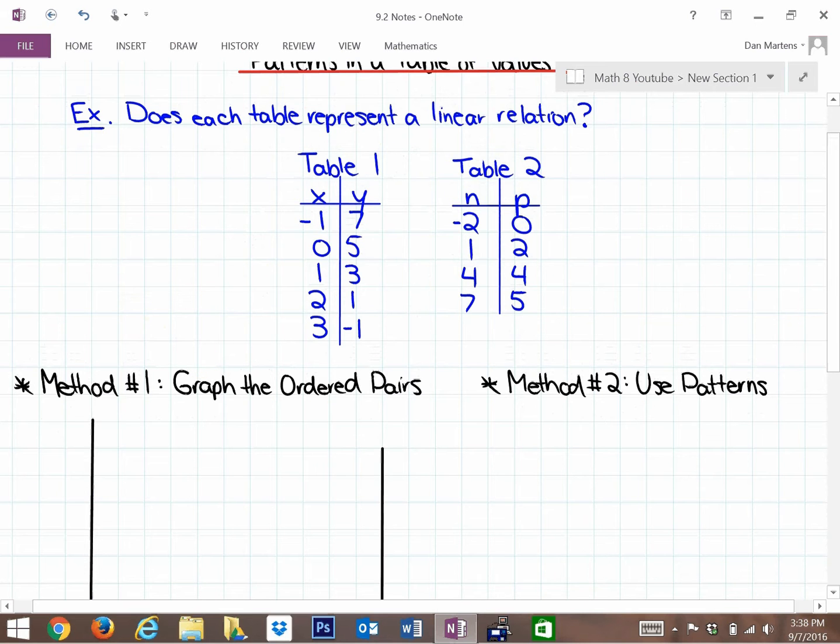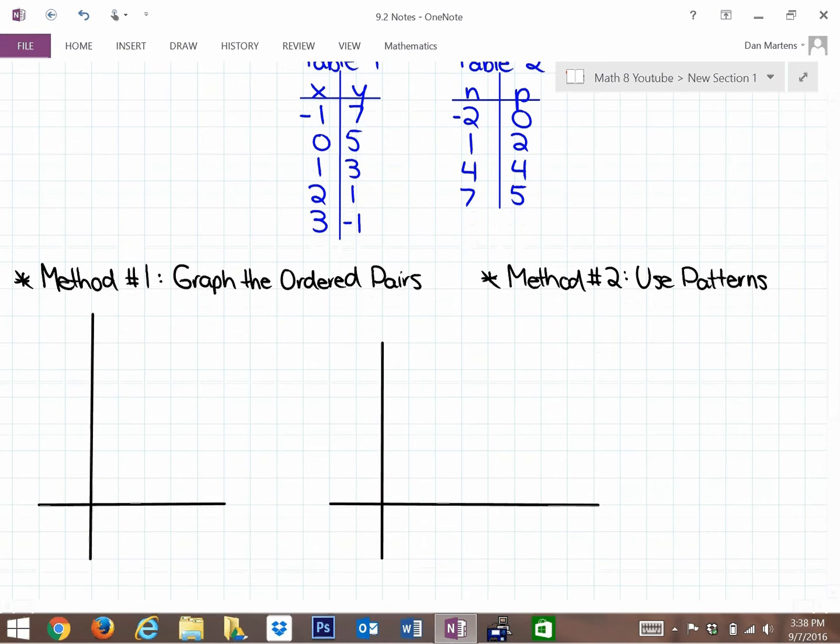For table one, the first thing we know is that the axes are x and y. The first column represents the horizontal axis, so that's x, and this is y. The x's go from negative 1 to 3. So if this is 0, here's negative 1, here's 1, 2, and 3. And the vertical axis has to go from negative 1 all the way up to 7. You always want to space these out evenly, which is something to be careful about.